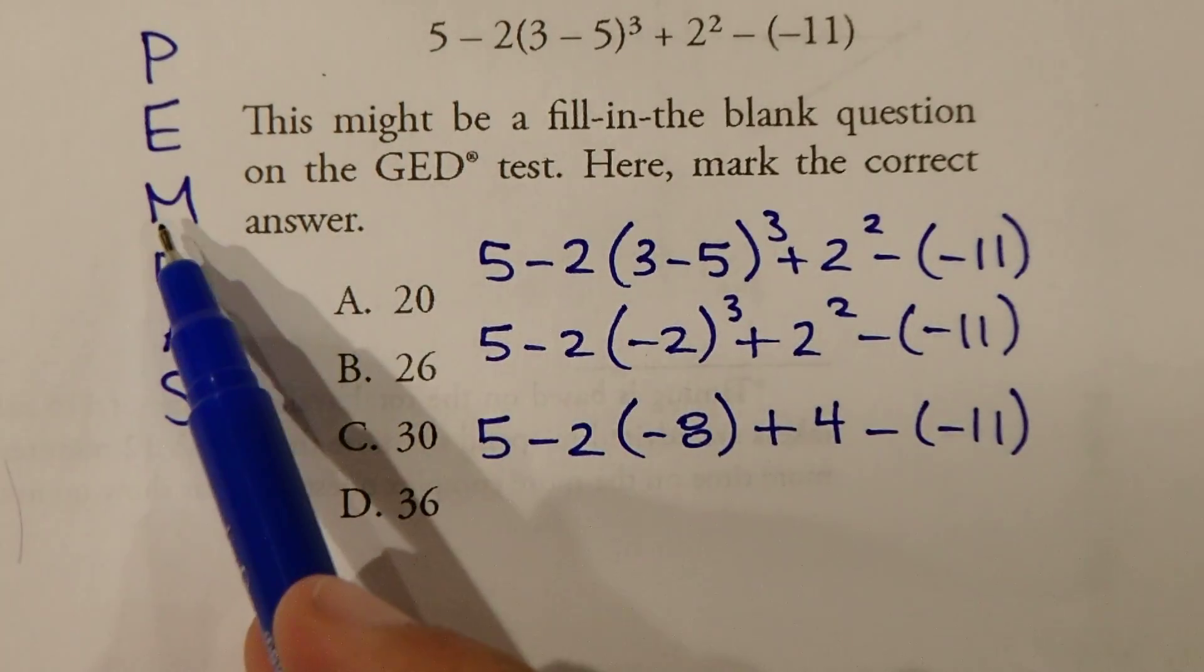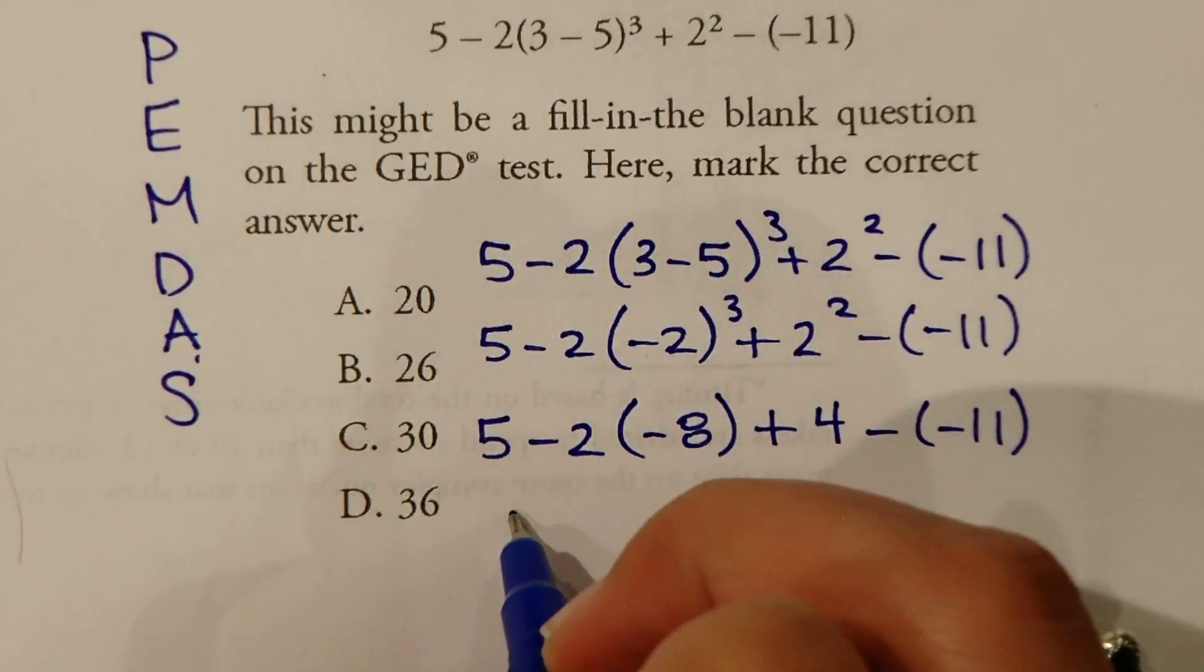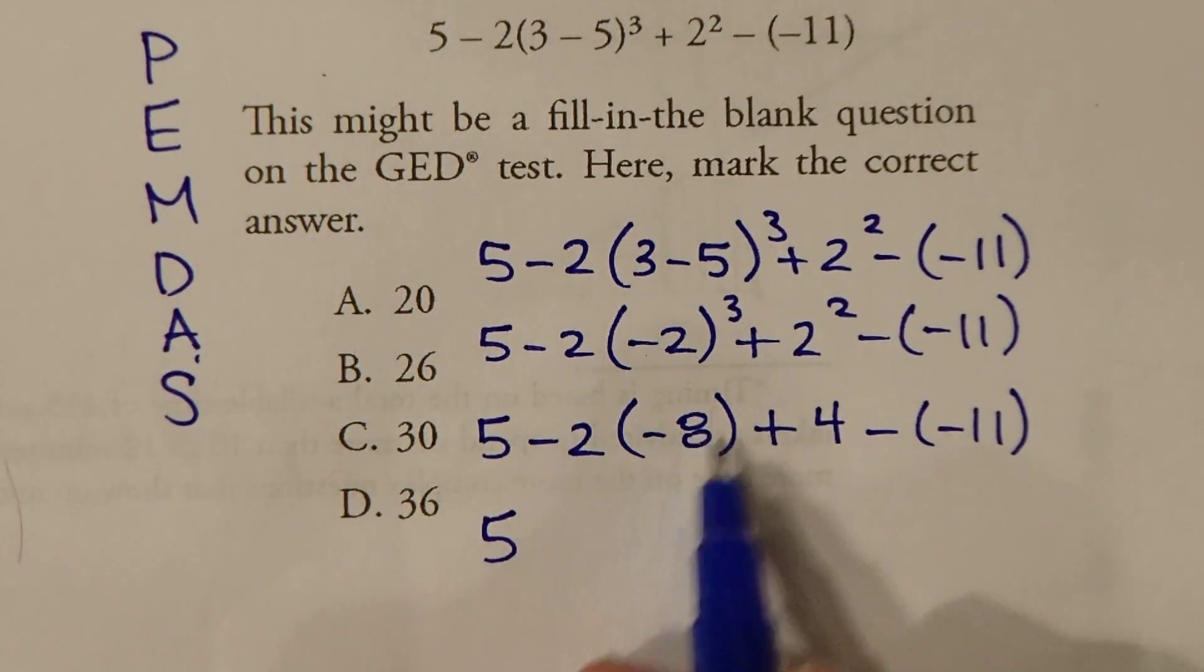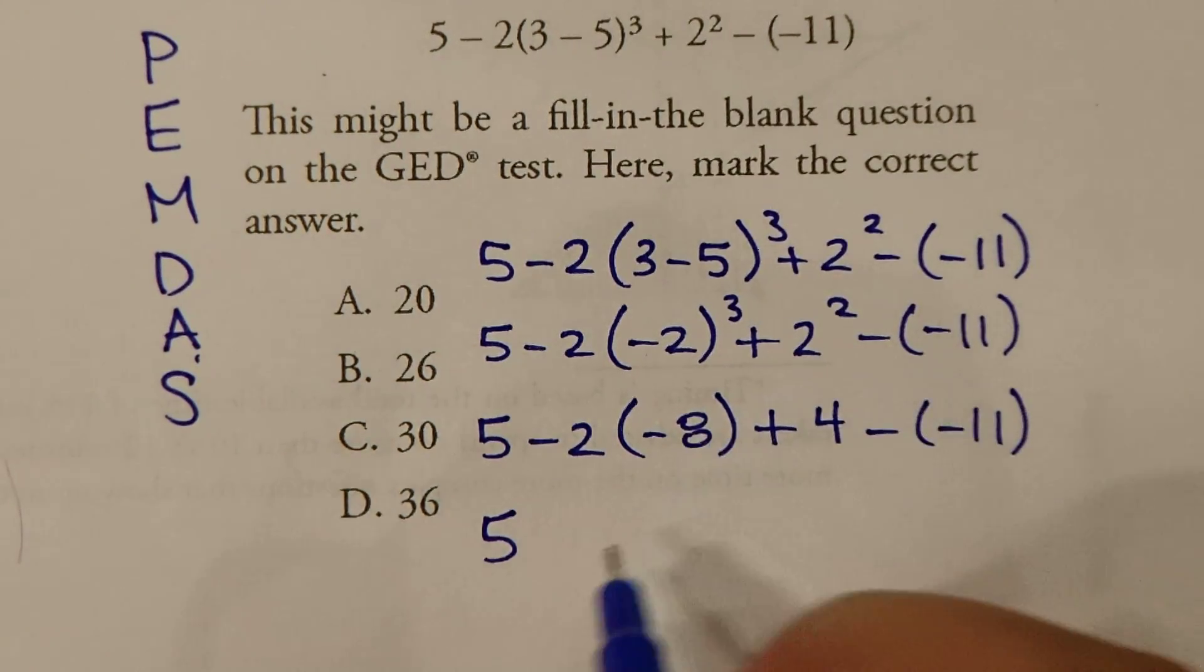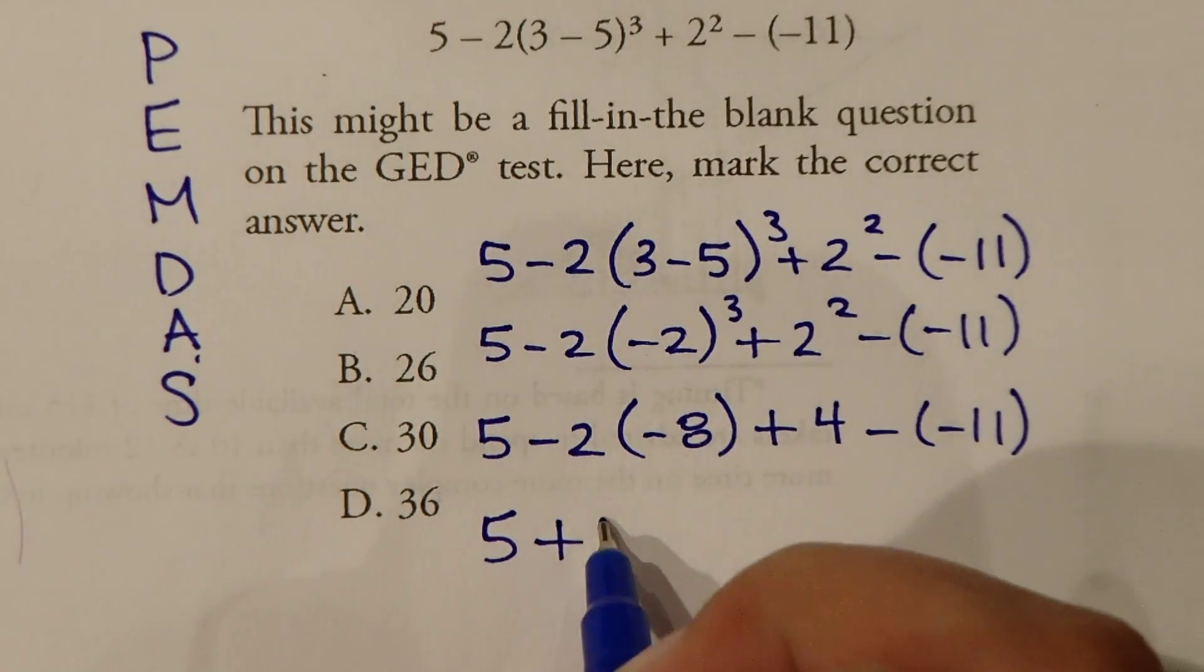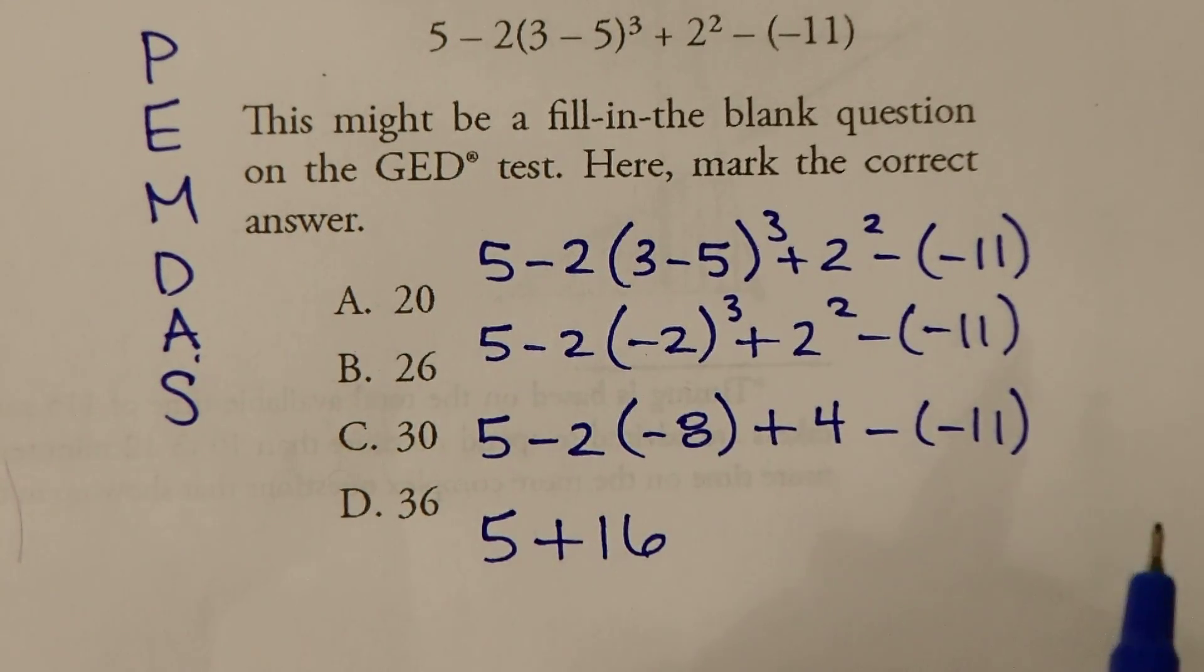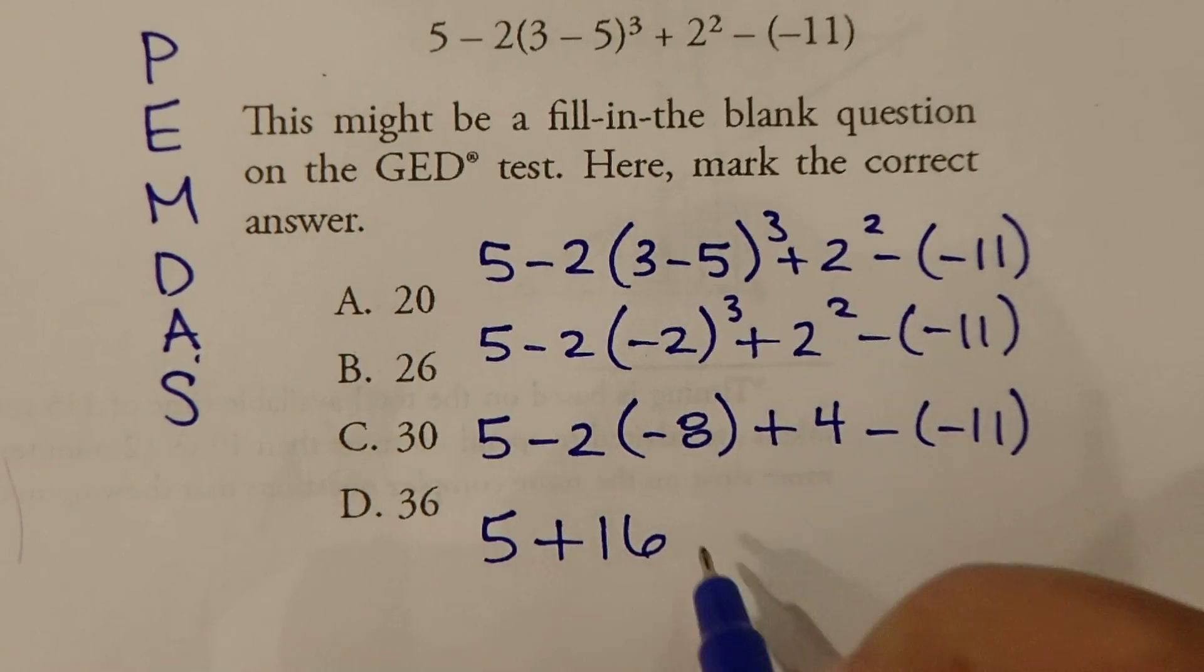Now we do M, multiplication. So 5, now we have minus 2 times negative 8. So that's going to be positive 16 plus 4.